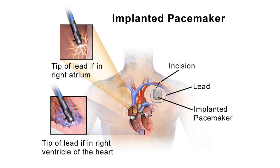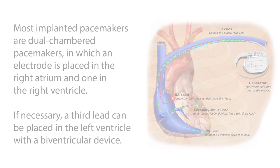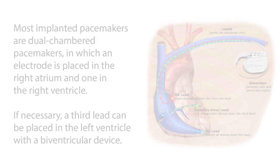The pulse generator is usually placed under the skin below the collarbone. Most implanted pacemakers are dual chambered pacemakers in which an electrode is placed in the right atrium and one in the right ventricle. If necessary, a third lead can be placed in the left ventricle with a biventricular device.